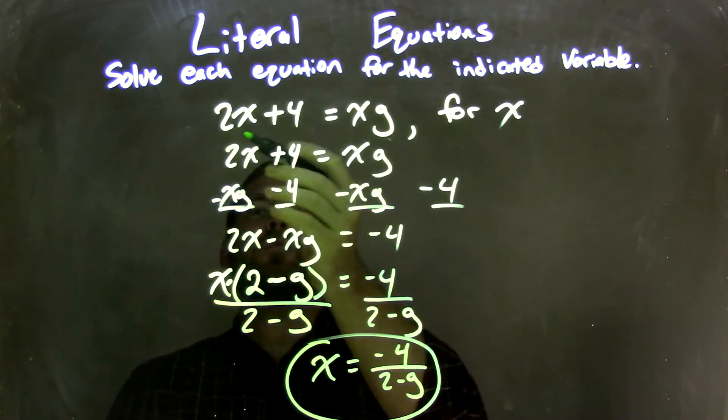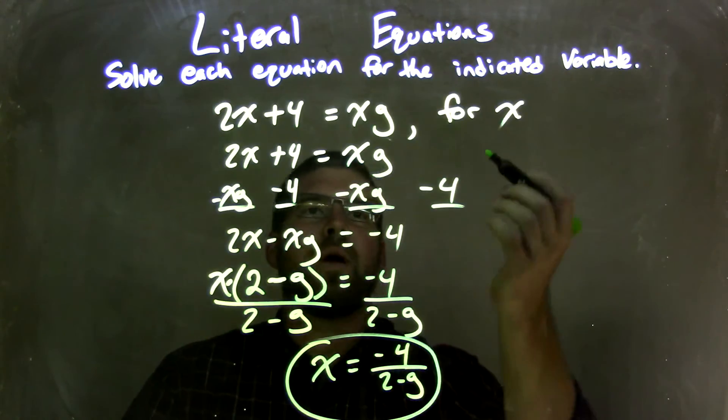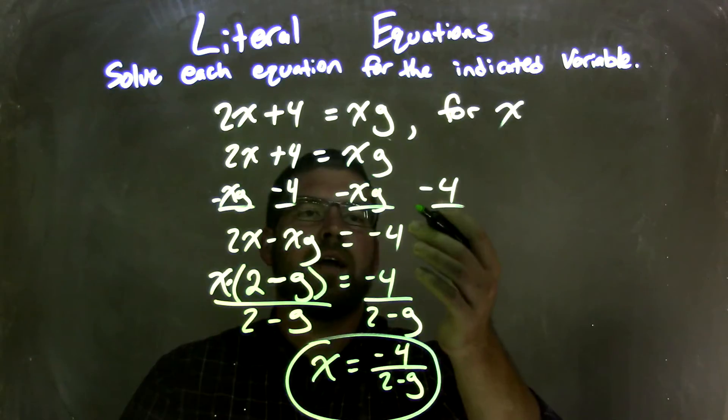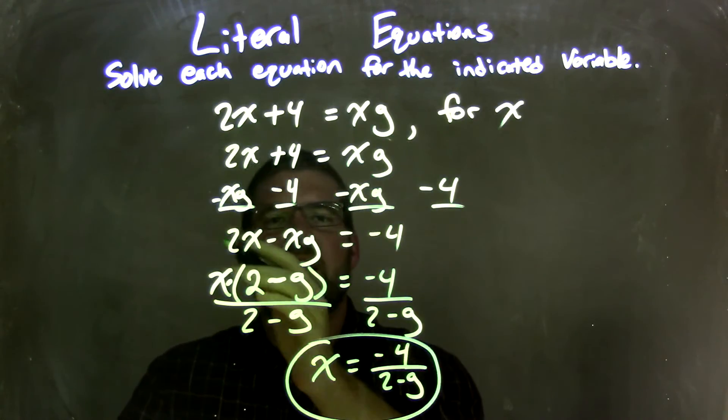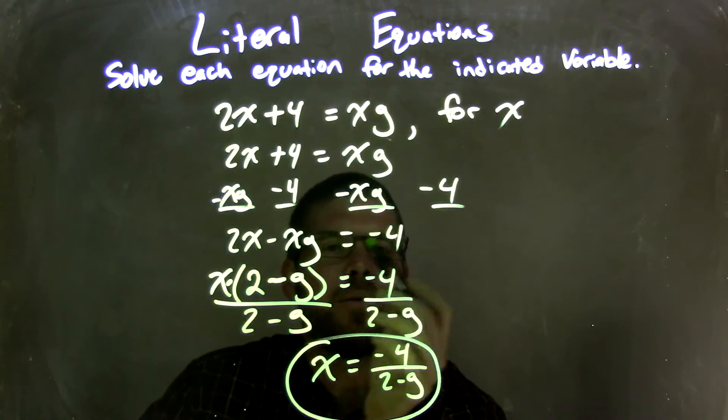So let's recap. We're given 2x plus 4 equals xg, and we needed to solve that for x. I rewrote my equation, brought my 4 to the right by subtracting it, and brought xg to the left by subtracting it as well. That gave me 2x minus x times g equals negative 4.